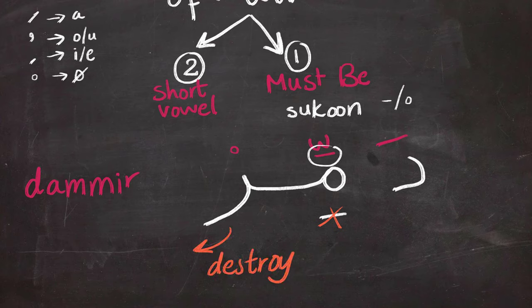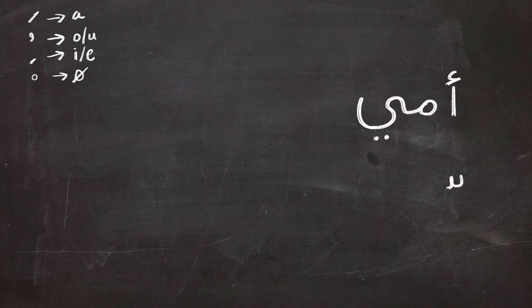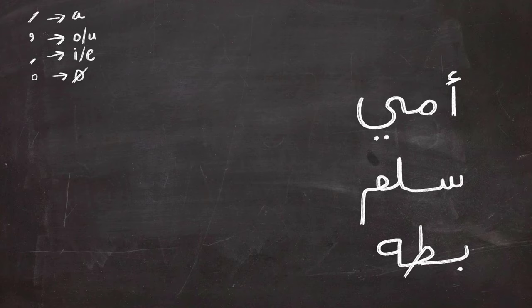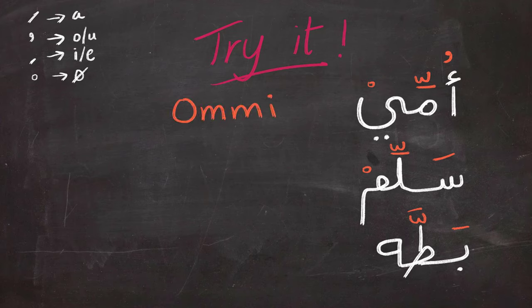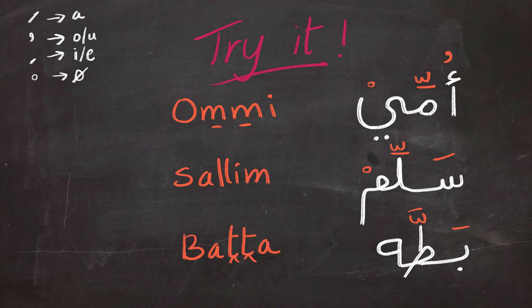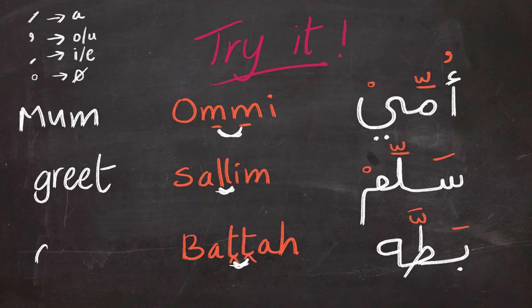Let's have a look at another set of examples, and this time I want you to try it yourself. So I'm going to wait for some time until you try to pronounce these words on your own and then compare your pronunciation to what I'm going to say. The first word is ummi, ummi. Second word is salim, salim. The third word is batta, batta. You can see the doubling in each of these words and you can see this back also in the spelling in English.